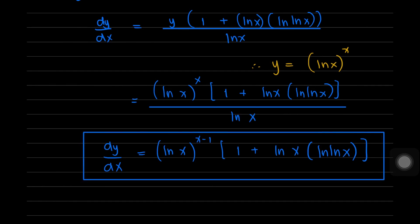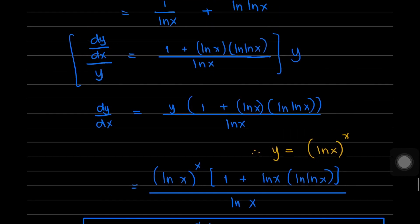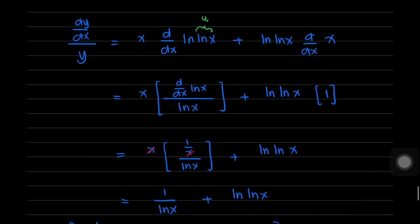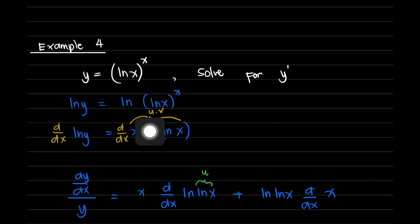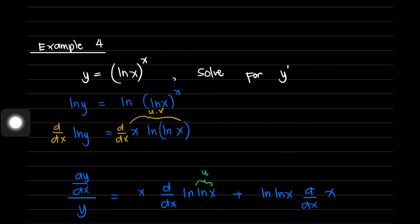And that's how we solve problems involving derivatives of exponential functions in which a variable is raised to a variable exponent. To summarize: we take the natural logarithm on both sides so that the variable exponent is brought down, before differentiating.